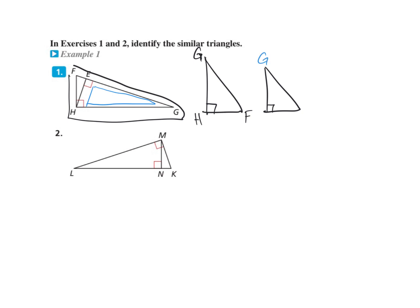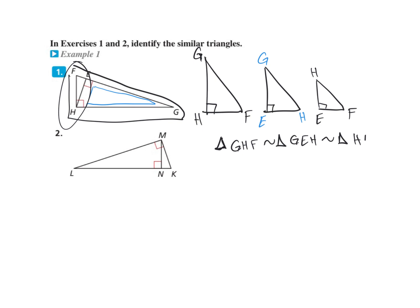The longer part is G, and it goes to E where the 90-degree angle is, and then to H. And then we draw an even smaller triangle, the little tiny one right here. H is the top part, it goes to E, which is the 90-degree angle, and EF is the small leg. It's important that you get these in the right order. So you say: triangle GHF is similar to triangle GEH, and that is similar to triangle HEF.